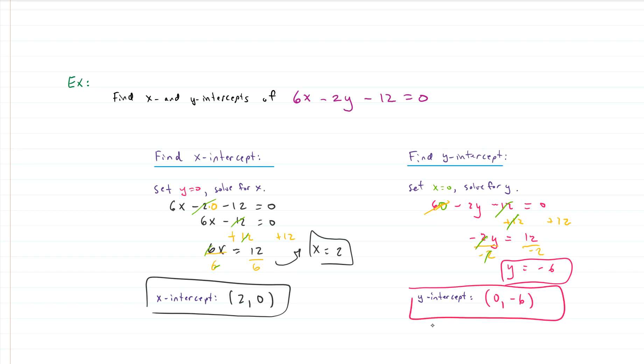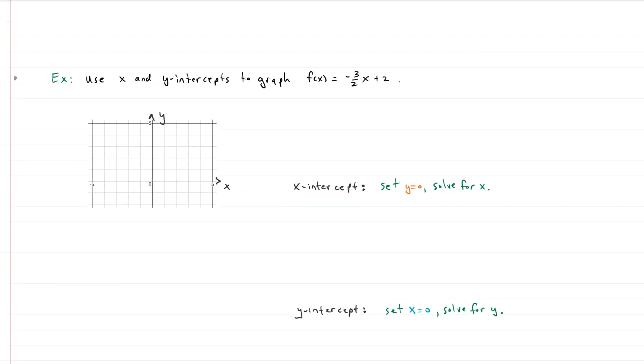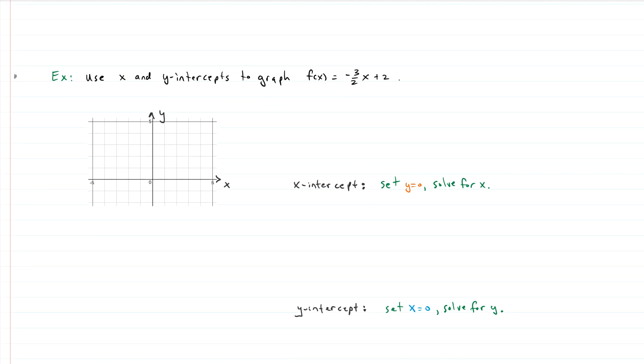So we've found the x and y-intercept for this function, the equation of this line. It's really not that bad, right? To find the x-intercept, we set y equal to zero and solve for x. Let's do one more problem just to solidify things.